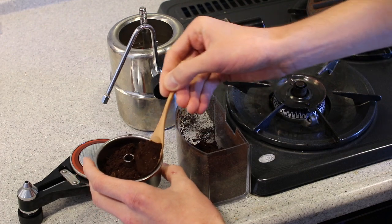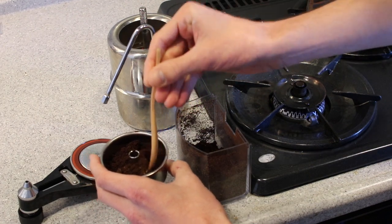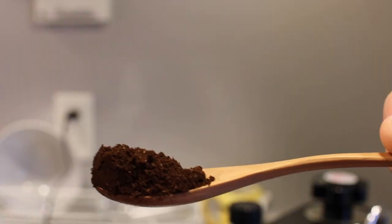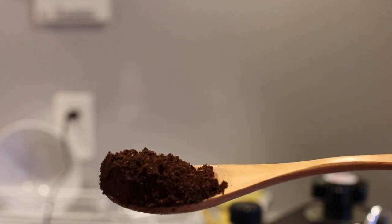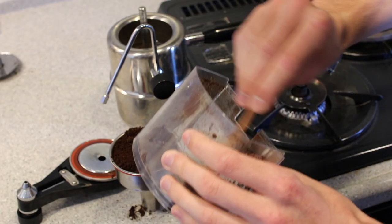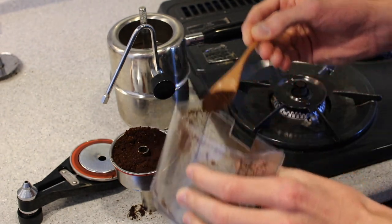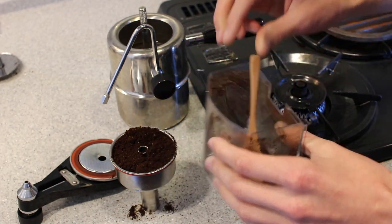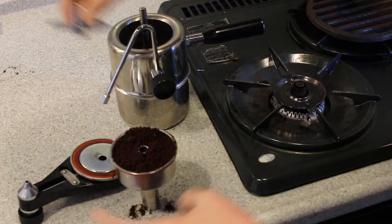The Bellman works best when the basket is full to the brim and lightly tamped. I grind to around a medium espresso grind. Too fine and you'll have grounds coming through the top filter. Too coarse and the water from the boiler will move through the grounds too quickly. Freshly ground espresso roasts tend to give the best results.